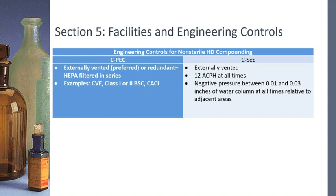Section 5 also covers engineering controls for compounding. For non-sterile compounding, the primary engineering control — a cabinet or hood — must be externally vented, which is preferred, or use redundant HEPA filters in series. This primary engineering control must be placed in a secondary engineering control — a room that itself needs to be externally vented with at least 12 air changes per hour and a negative pressure of 0.01 to 0.03 inches of water column.